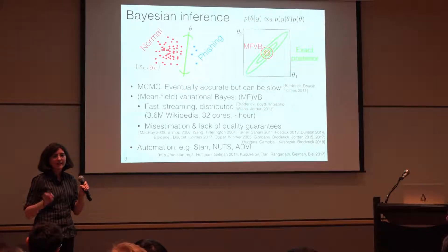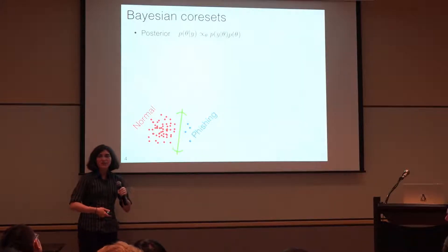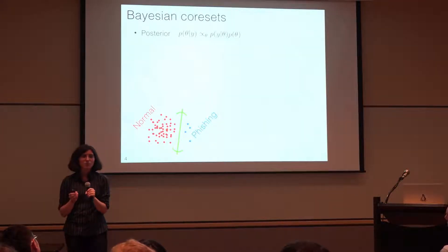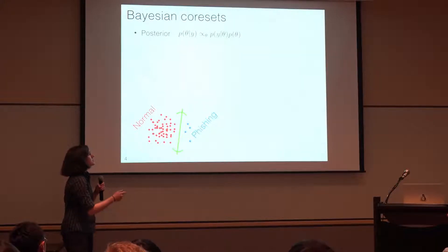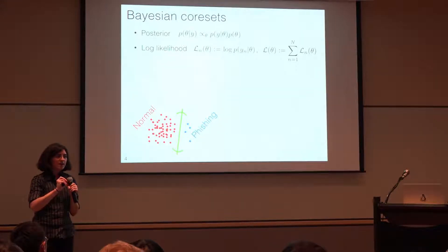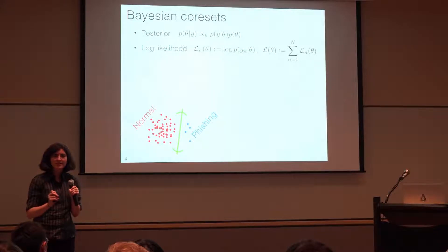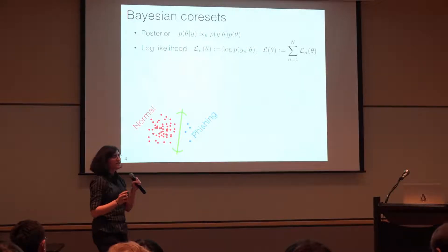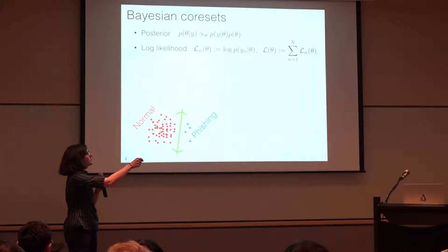Our proposal is data summarization. There are two ingredients in Bayesian inference: the prior and the likelihood. Squashing down the data impacts the likelihood. Starting here, I'll assume our data are independent conditional on the underlying parameter—this covers many models. Under that assumption, we can define a log-likelihood for each data point, call it script-L sub n, and the total log-likelihood is the sum over script-L sub n.